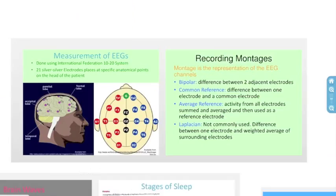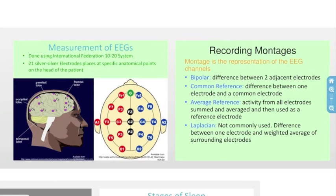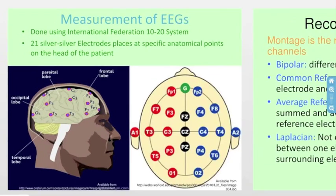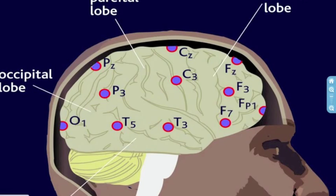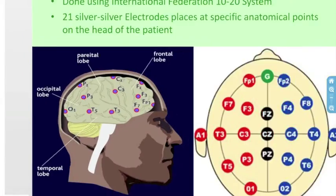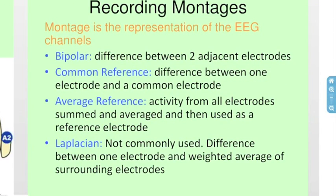EEGs are measured using the International Federation 10-20 system. This involves using 21 silver-silver electrodes placed at specific anatomical points on the head of the patient. A differential signal is amplified and displayed as a channel of EEG activity. This representation of the EEG channels is called a montage. There are four types of montages: bipolar, common reference, average reference, and Laplacian.